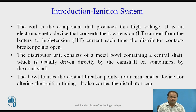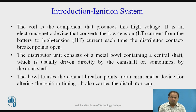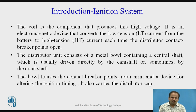Now we will see the ignition system. The coil is the component that produces high voltage. It is an electromagnetic device that converts low-tension current from the battery to high-tension current, each time the distributor contact breaker points open. The distributor unit consists of a metal body containing a central shaft, which is usually driven directly by the camshaft or sometimes by the crankshaft. The body houses the contact breaker points, rotor arm, and a device for altering the ignition timing. It also carries the distributor cap.